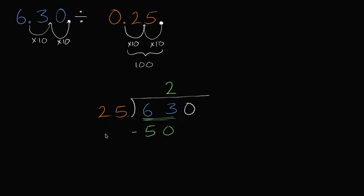And we can subtract. Or if you didn't know 2 times 25 is 50, you could have said 2 times 5 is 10, carry the one or regroup the one, 2 times 2 is 4, plus 1 is 5. So we got 50. Now we subtract, and we get 3 minus 0 is 3, 6 minus 5 is 1.